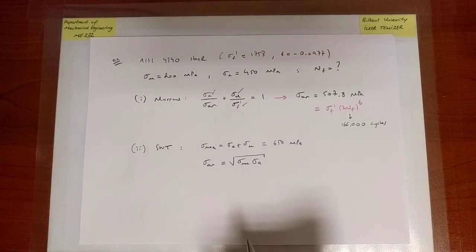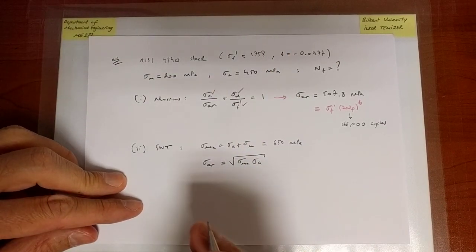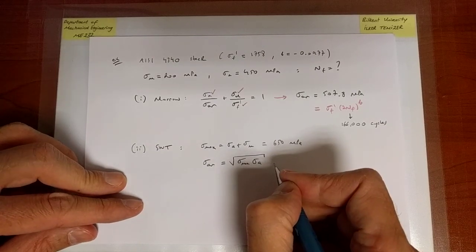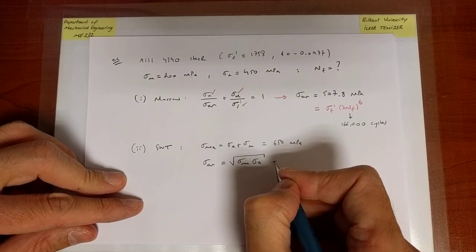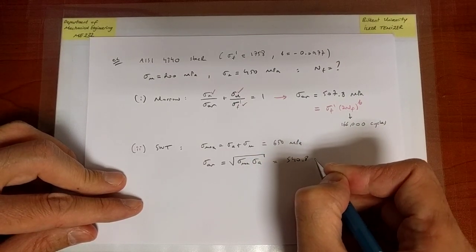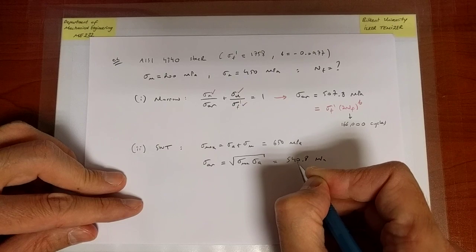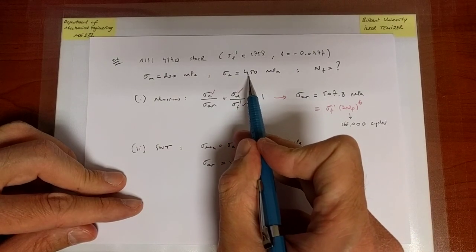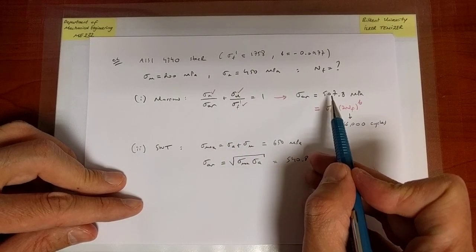But in this case, it's not zero, and still the map works. That's the idea of SWT. And we can go ahead and calculate that value, and you can find that to be 540.8 MPa.